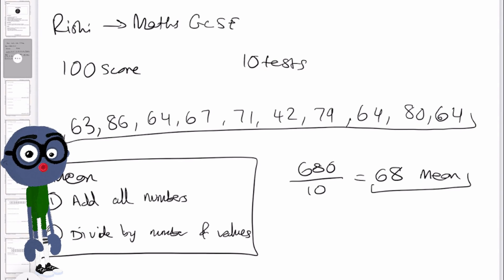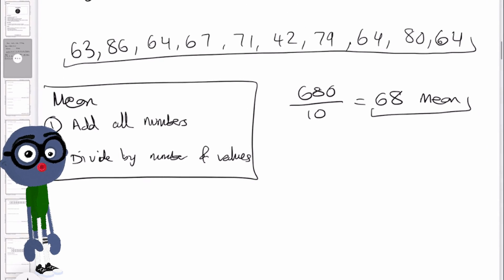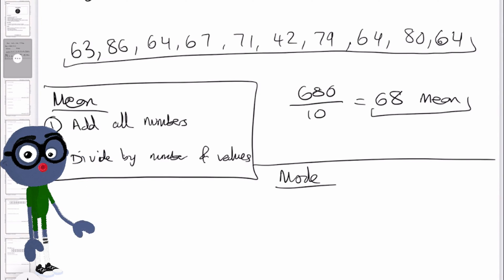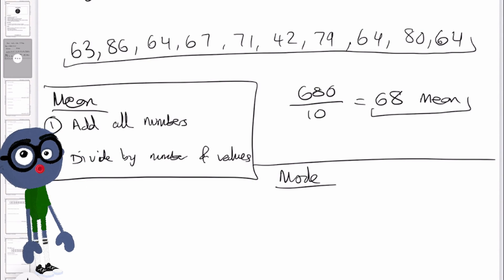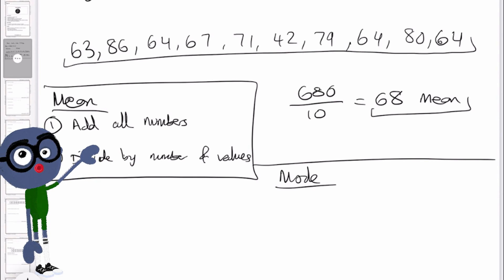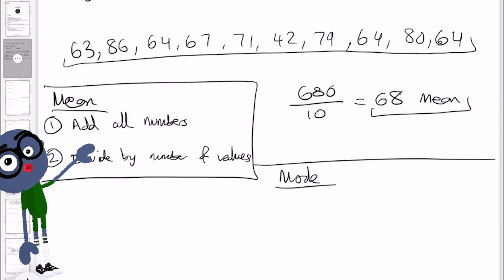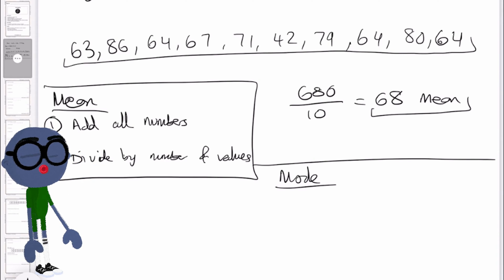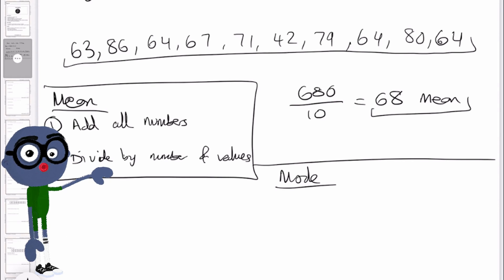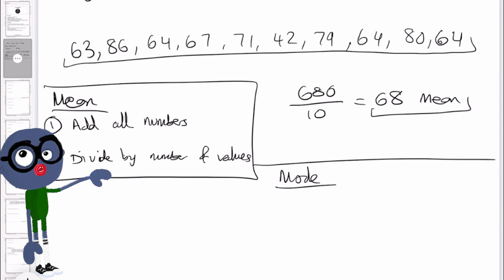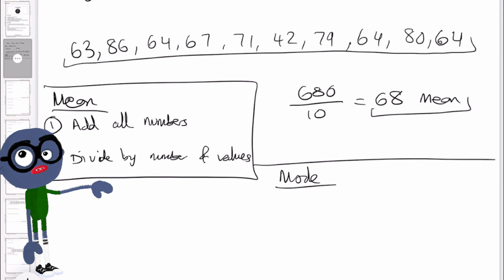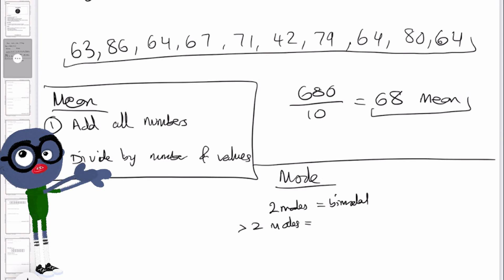Now let's work out the mode. The mode is simply the most common value in the data. It is the only average where there can be more than one. If there are two modes, we say it is bimodal. If there are more than two modes, it is multimodal.